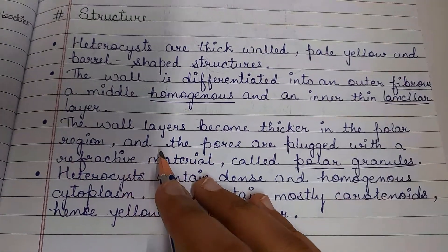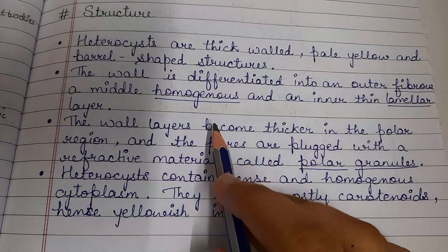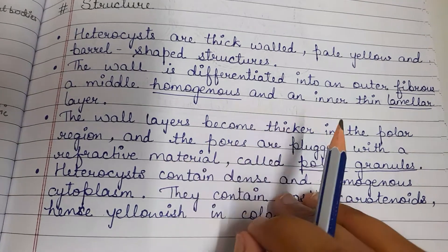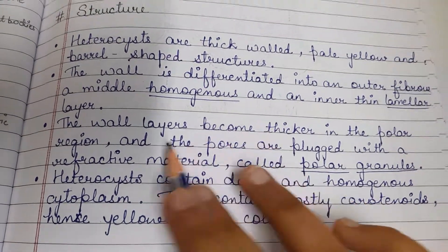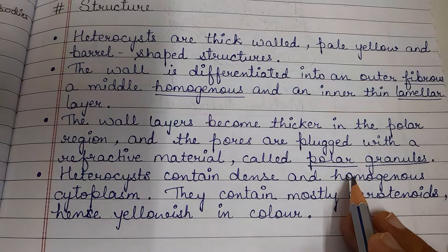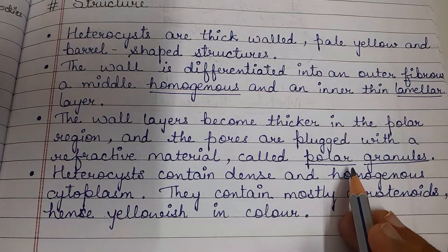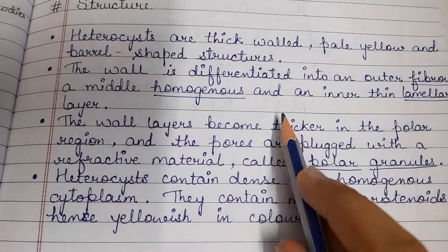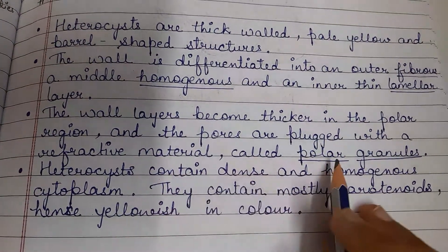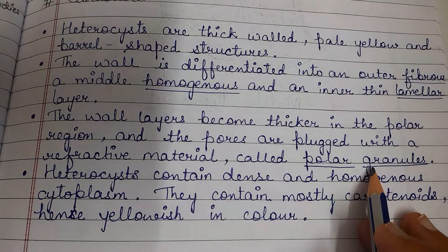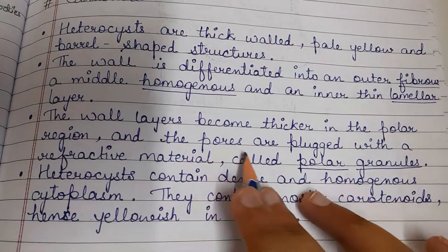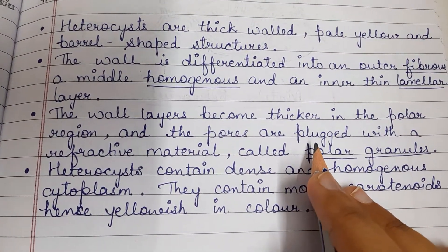The wall layers become thicker in the polar region. The poles are plugged with a refractive material called polar granules. The pores are plugged into the polar granules, meaning they connect and mix within this material.